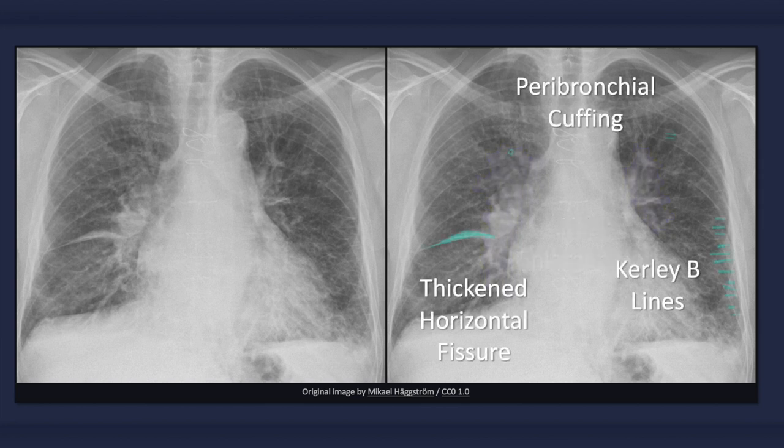An edematous interstitium is another important feature of congestive heart failure. Three signs of thickened interstitial tissue include Kerley B-lines, peribronchial cuffing, and interlobar fissure thickening.